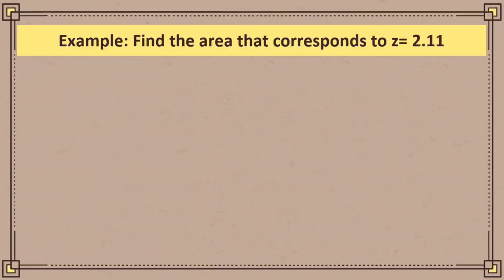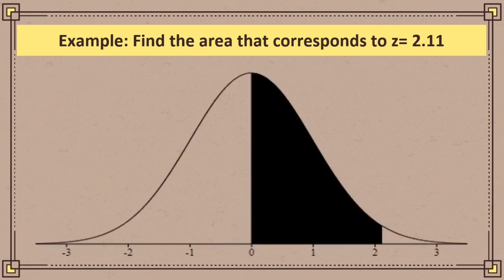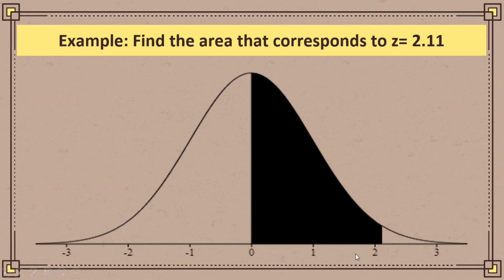Look at our first example. Find the area that corresponds to z = 2.11. The first step we need to do is to construct a normal curve. As you can see, the shape of a normal curve is bell-shaped. Take note of that. After constructing the normal curve, the next step is to shade the part of the normal area that is given to us. Since we're finding the area of z = 2.11, our shaded part is from 0 to 2.11.